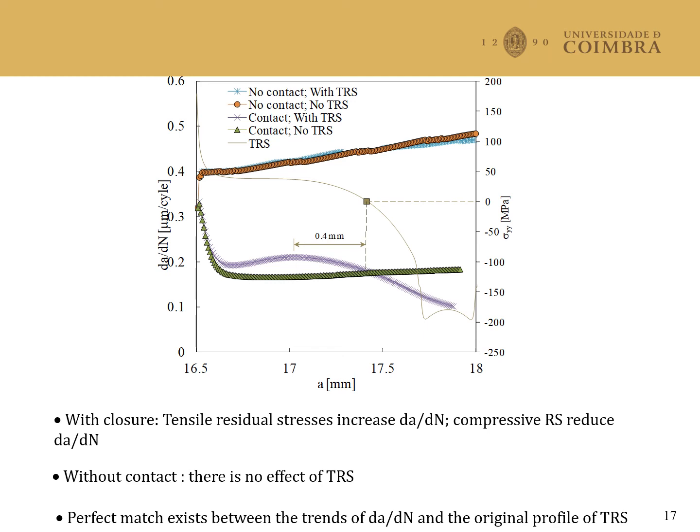The removal of contact of crack flanks produces a significant increase of da/dN, associated with the elimination of crack closure. The increase of crack length once again produces a progressive increase of da/dN. But more importantly, there is no effect of thermal residual stresses in the absence of crack closure. This indicates that the effect of thermal residual stresses is associated with crack closure phenomena.